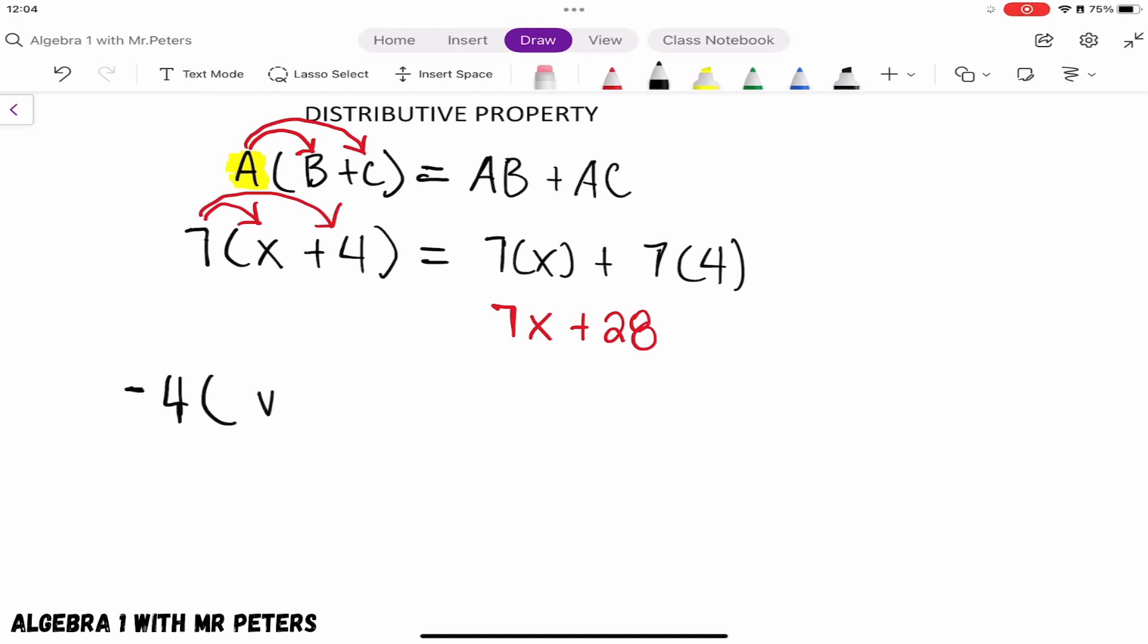What I want you to understand is the same rules apply. We're going to take that outside term and multiply it by the expression inside the parentheses. That means every term inside the parentheses will be multiplied by that outside number or variable. In this problem, that's going to be -4.